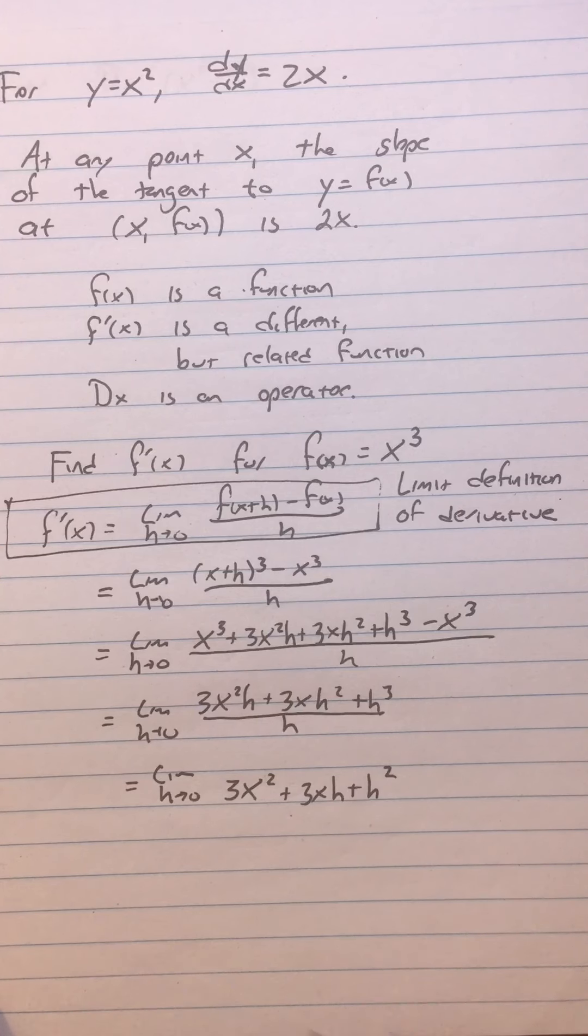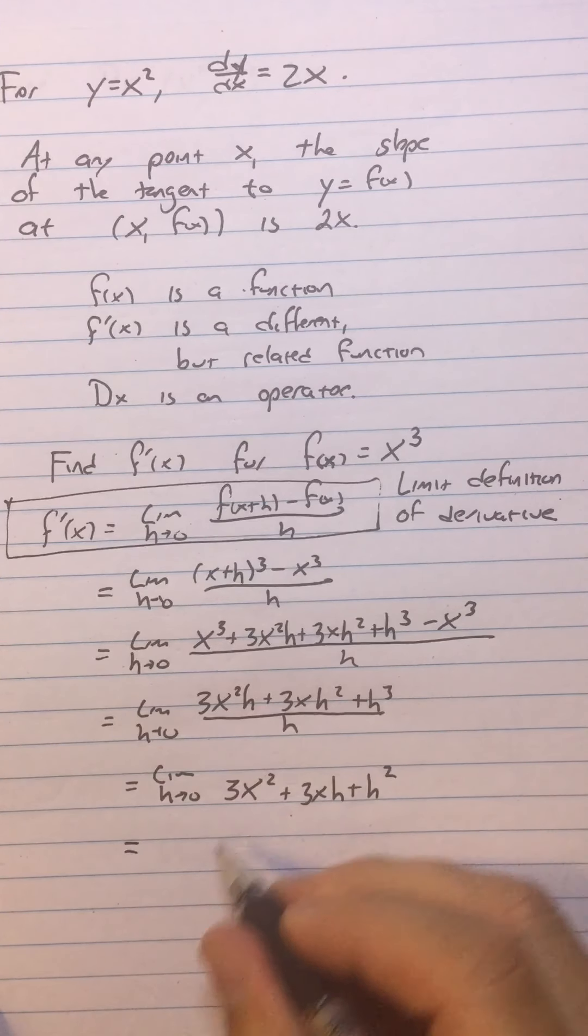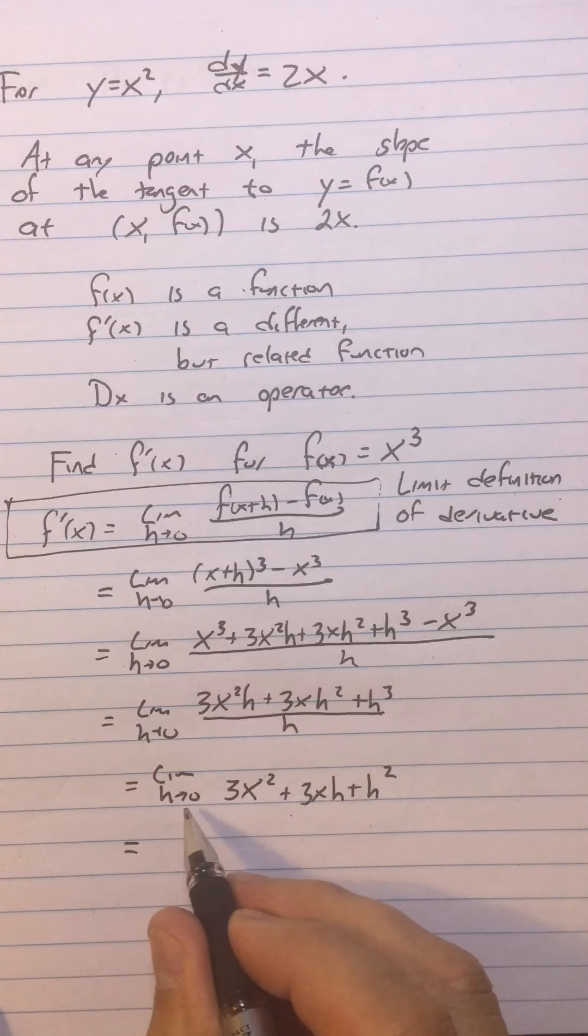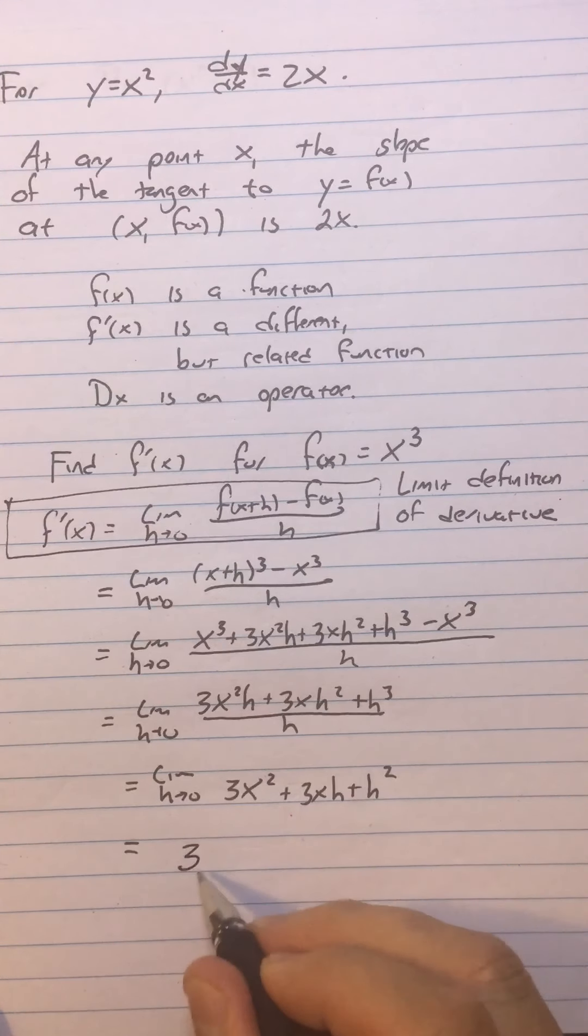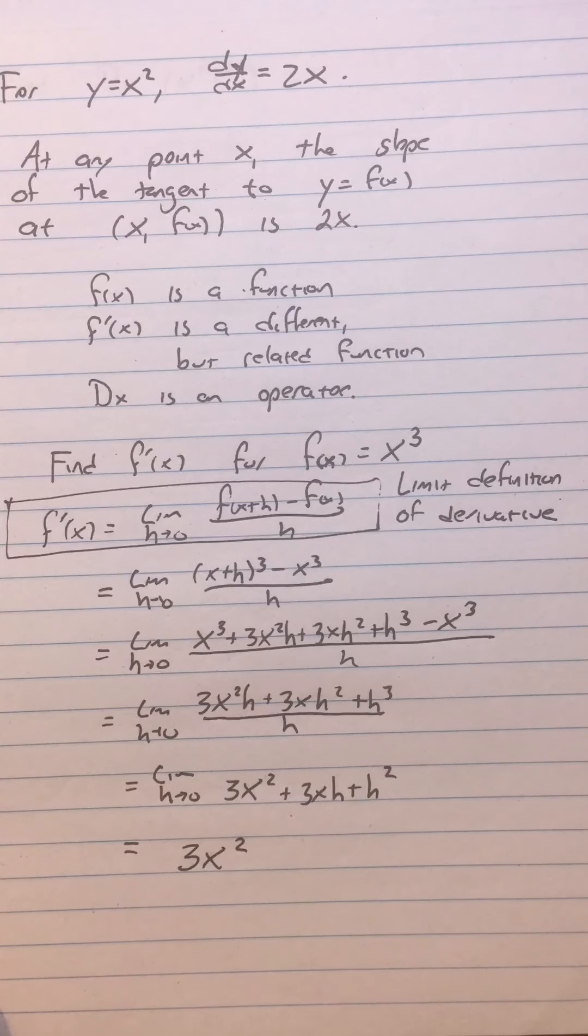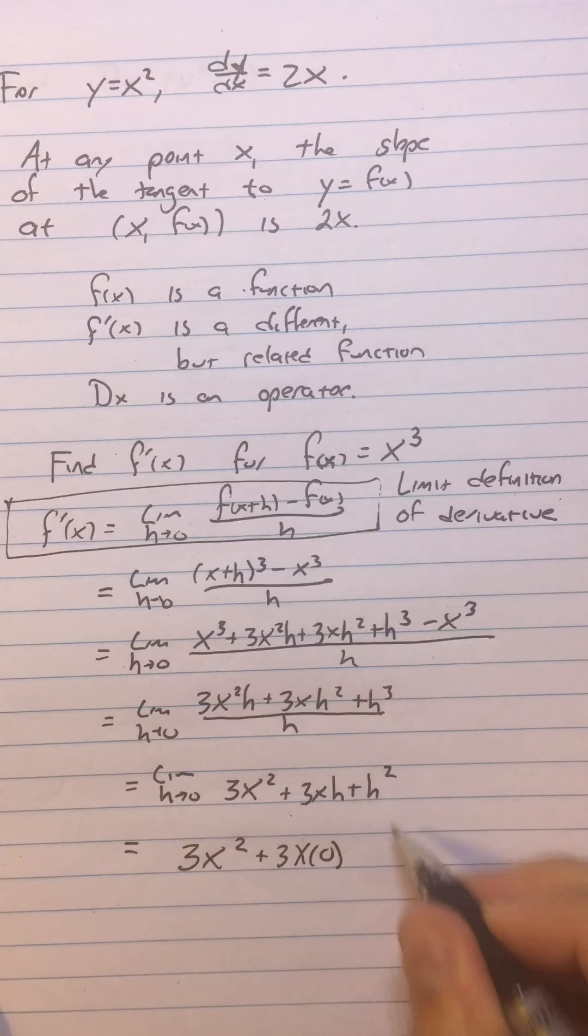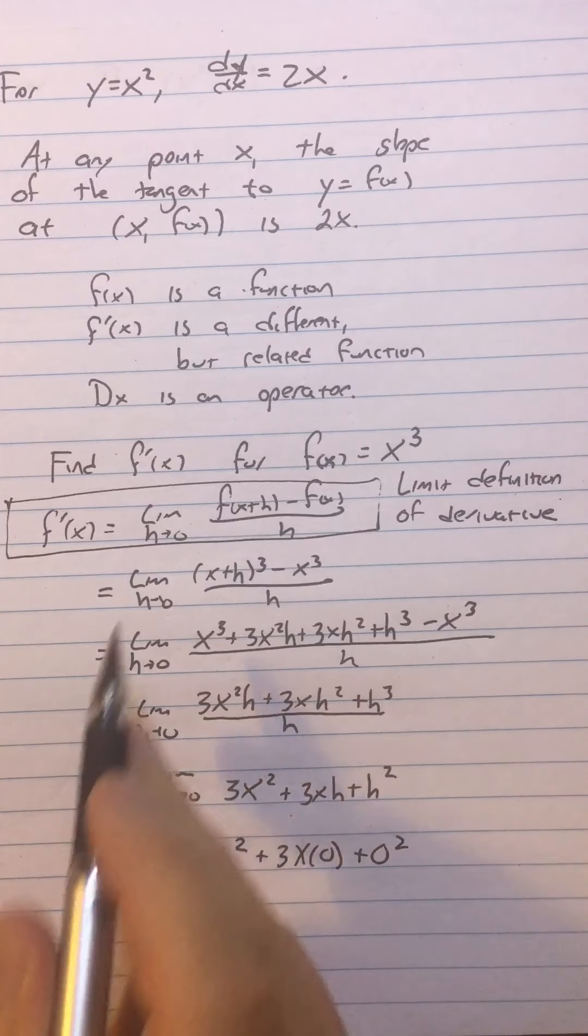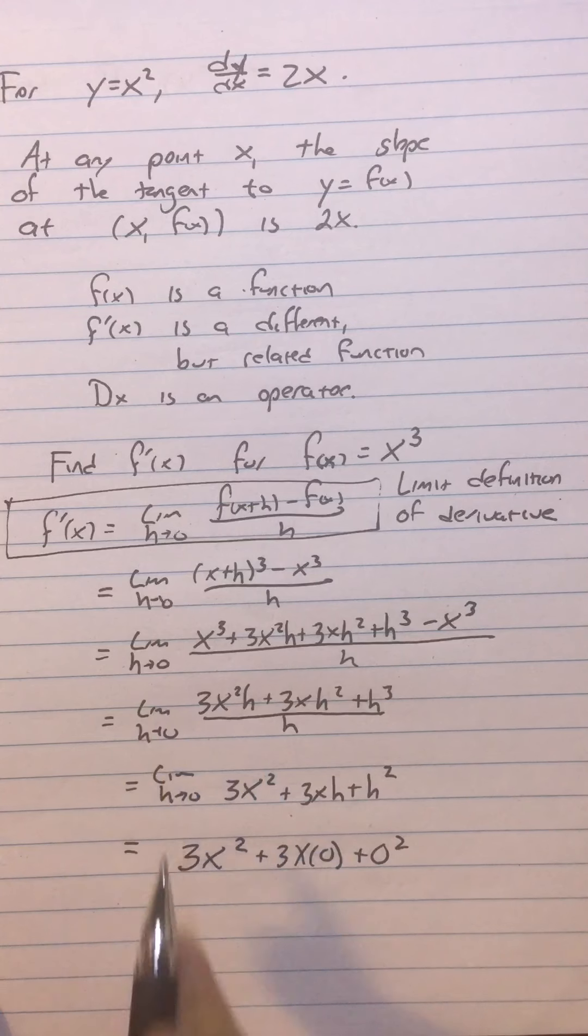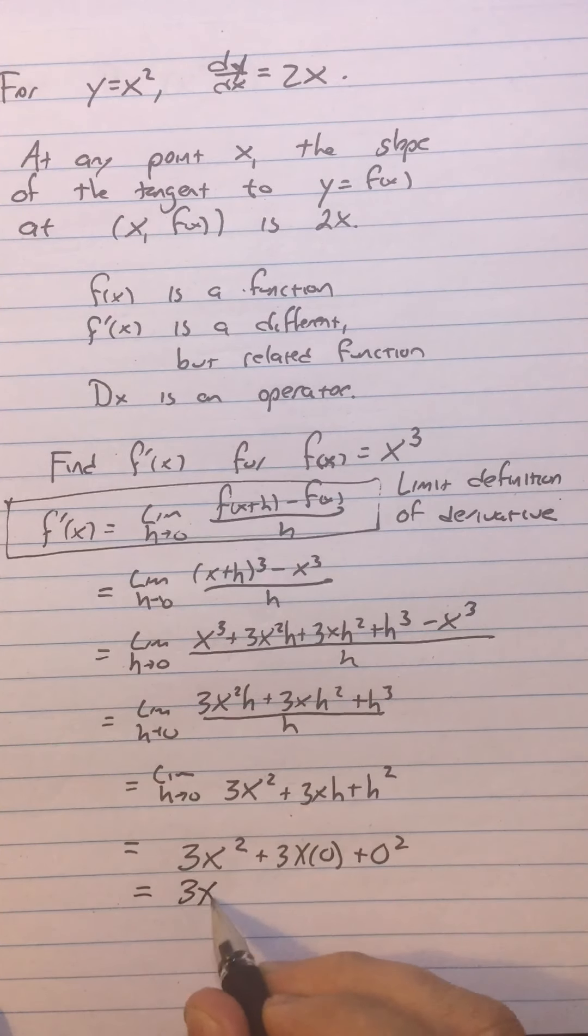Now I evaluate the limit by substitution. So x is not the variable h. So when I plug in h equals 0, there's no place to plug it here. So the 3x squared just stays 3x squared. When I plug in h equals 0 here, I get plus 3x times 0. And when I plug in 0 here, I get 0 squared. Evaluate. No longer limit. And this just equals 3x squared.